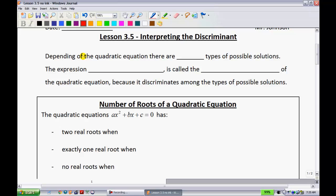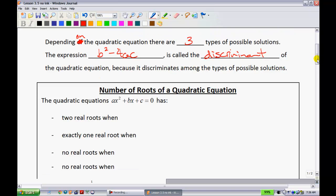Depending on the quadratic equation, there are three types of possible solutions. The expression b squared minus 4ac is called the discriminant of the quadratic equation, because it discriminates among the types of possible solutions.